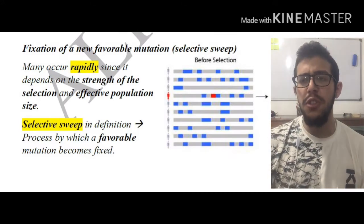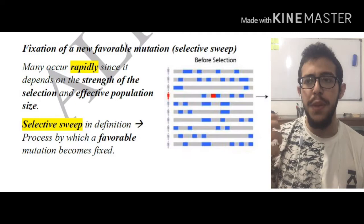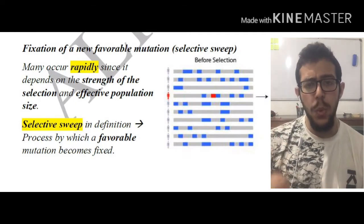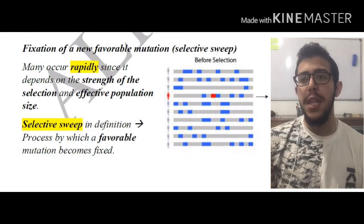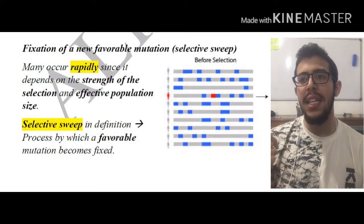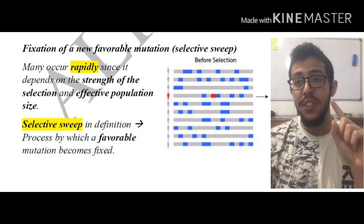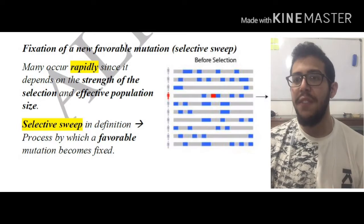We have to understand that many selective sweep phenomena occur very rapidly, and this depends upon the strength of the selection and the effective population size.